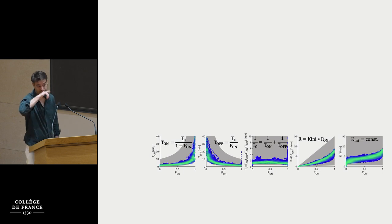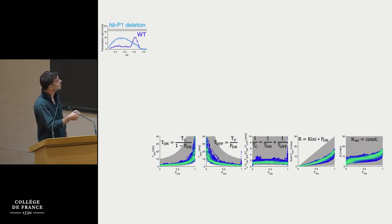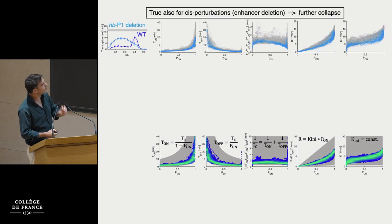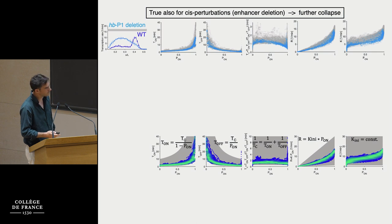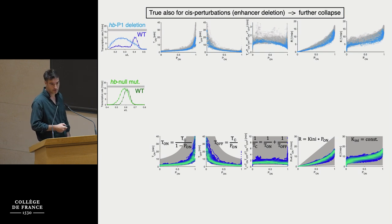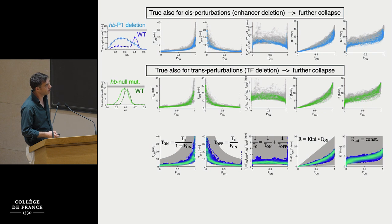We were so surprised by this that we decided to perturb the system. Knocking out an enhancer of hunchback changed the pattern dramatically from wild type — we acted on p-on quite severely. However, even though p-on changed, the bursting parameters all collapsed again onto our wild-type data. Something similar happens for trans-mutation: taking out an entire transcription factor and looking at a gene it controls again shifts the pattern wildly, acting on p-on. But the bursting parameters all collapse on the wild-type data.